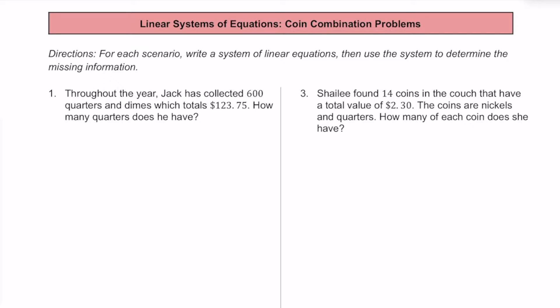For question one, throughout the year, Jack has collected 600 quarters and dimes, which totals $123.75. The question is how many quarters does Jack have? Let's go ahead and define our variables. I'm going to let Q represent the number of quarters, and D represent the number of dimes.